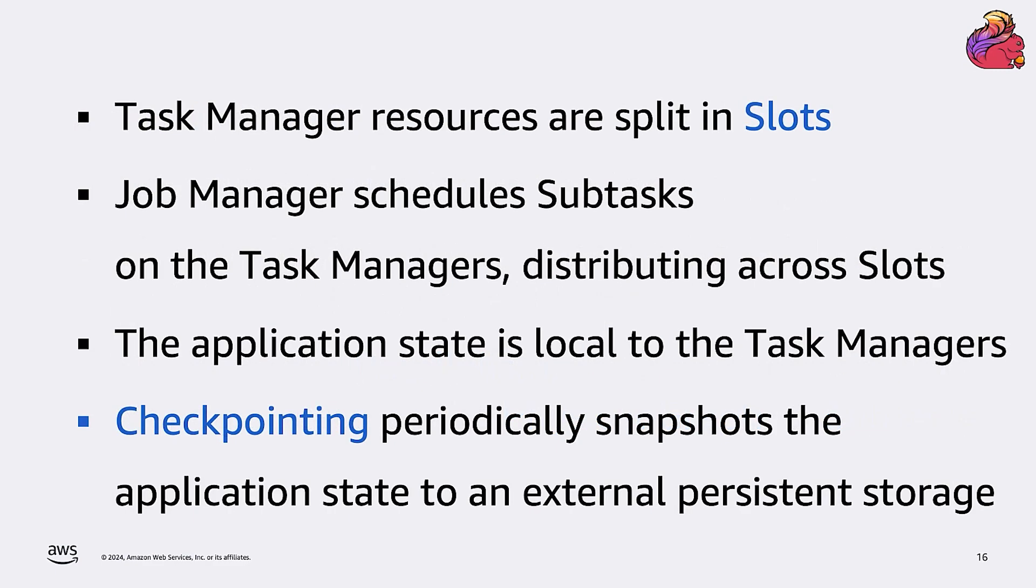Task managers are logically split into slots, and a slot is just a logical unit that helps Flink distributing the workload across the task managers. The job manager schedules the subtasks to the task managers, distributing them across all slots. And when data starts flowing, any information in the state, in the state of the application, is stored locally in the task manager memory. The checkpointing system takes a periodic snapshot of the application state and copies them to an external persistent storage. And this copy can be used to restart the application in case of failure.